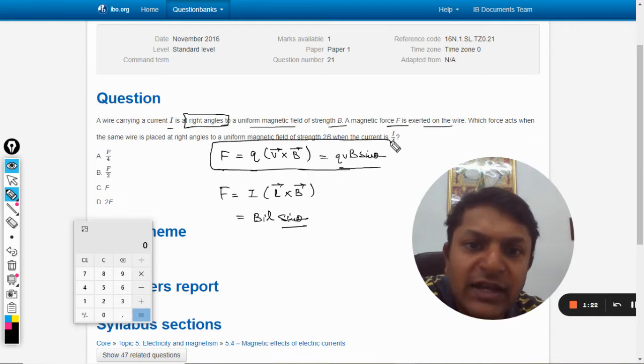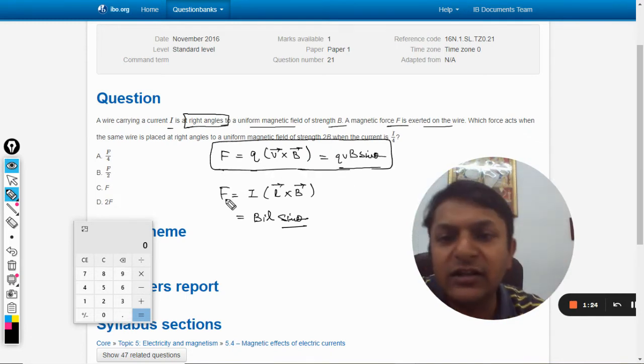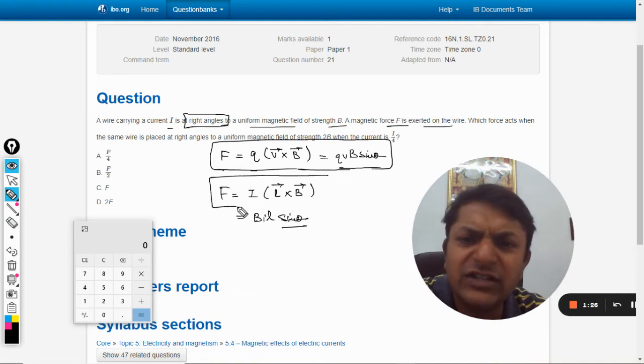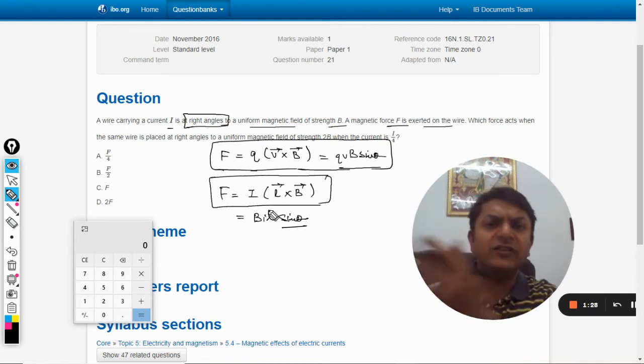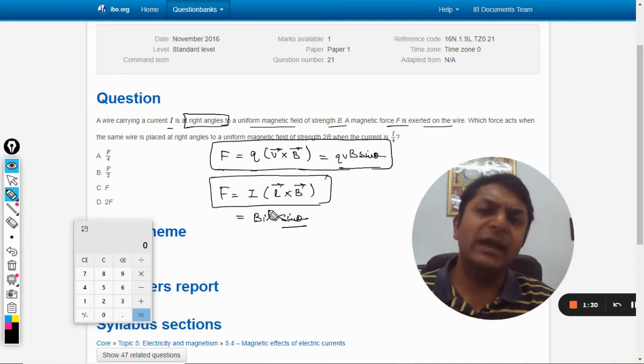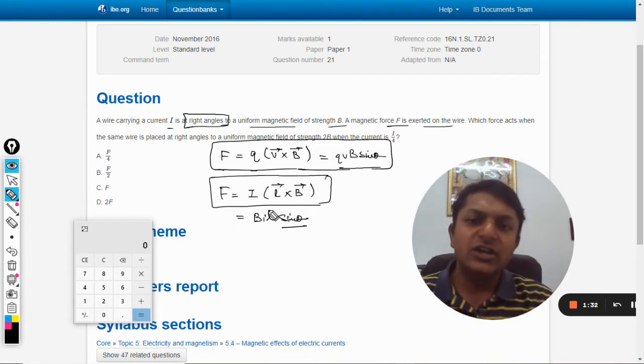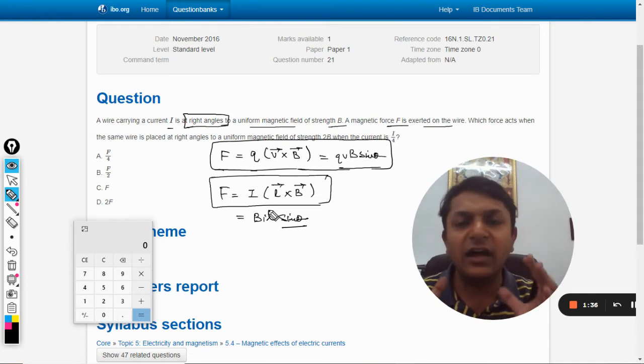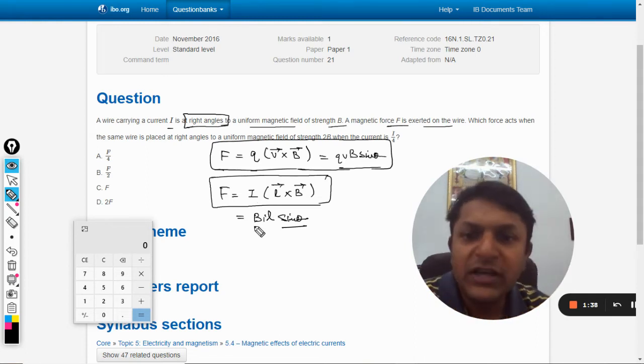Now this formula we are not going to use because this is the formula that we use in the case of charged particles. This is the formula which is just the extension of the other formula which can be applied on the current carrying conductors.